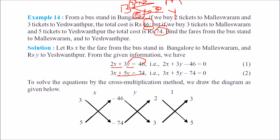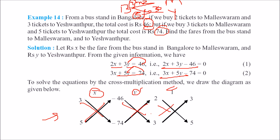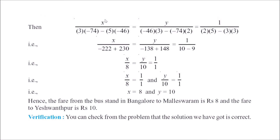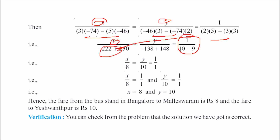Transfer the constants to the left side so both equations equal 0. Then arrange in the form a1x plus b1y plus c1 equals 0 and a2x plus b2y plus c2 equals 0. Apply the cross multiplication method: write x, y, 1 with the appropriate numerators and denominators to solve for x and y.